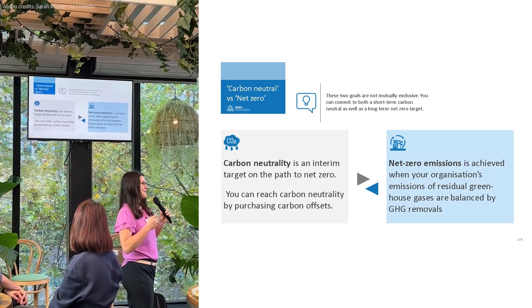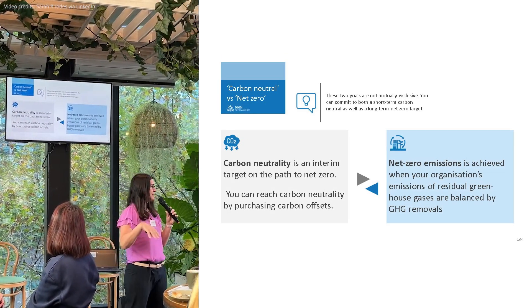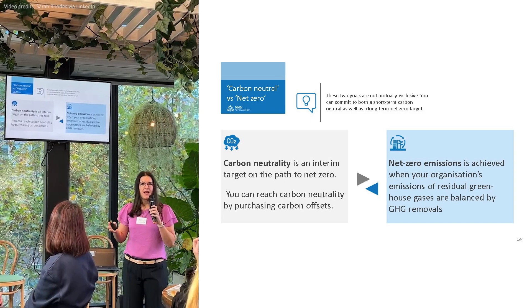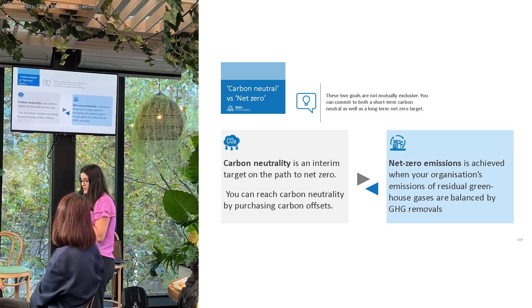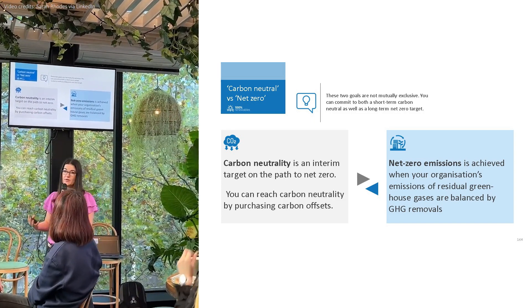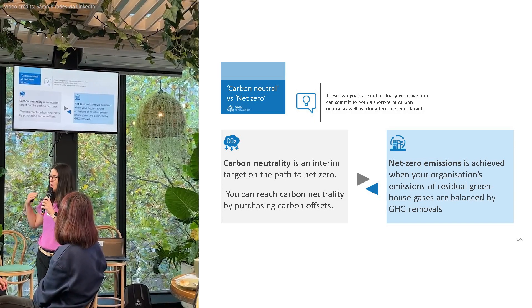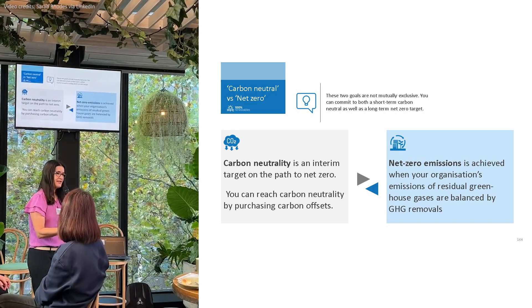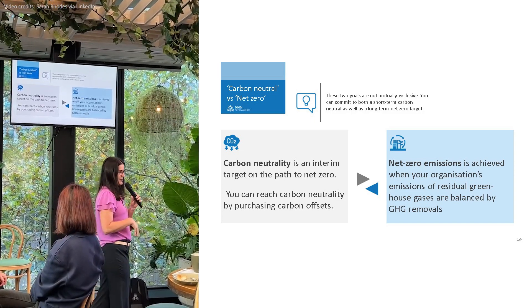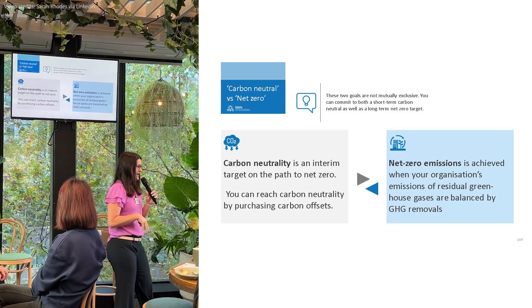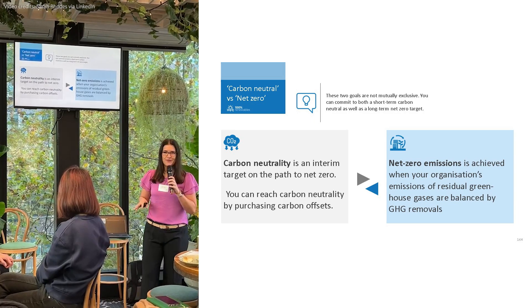There's a difference. Carbon neutrality is when your greenhouse gases are balanced by carbon offset projects — carbon credits that you buy to offset your carbon footprint — whereas net zero is a long-term decarbonisation path where you balance your residual emissions with offsets that are removal-based.